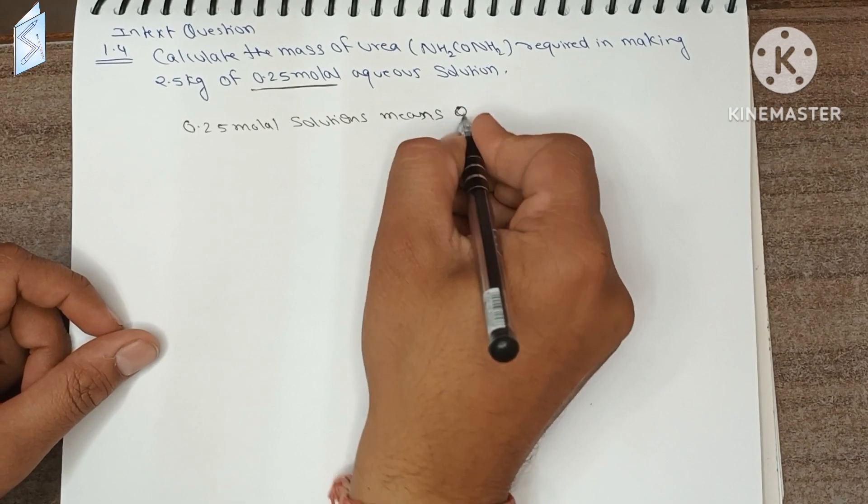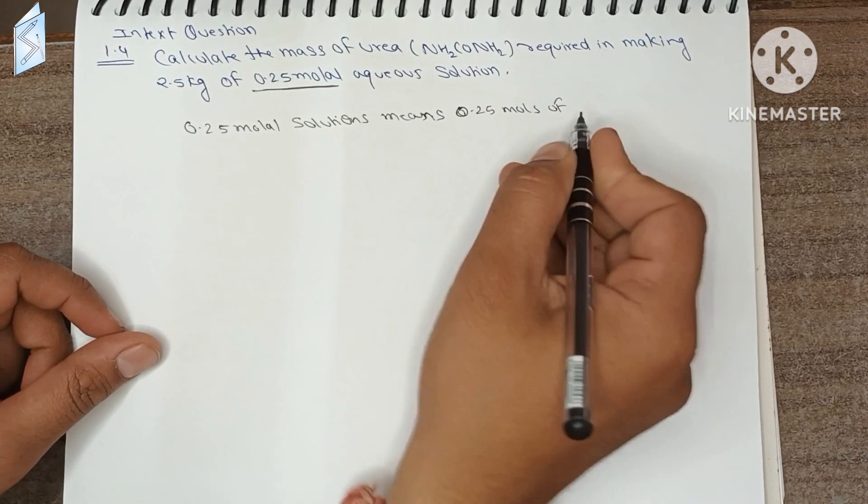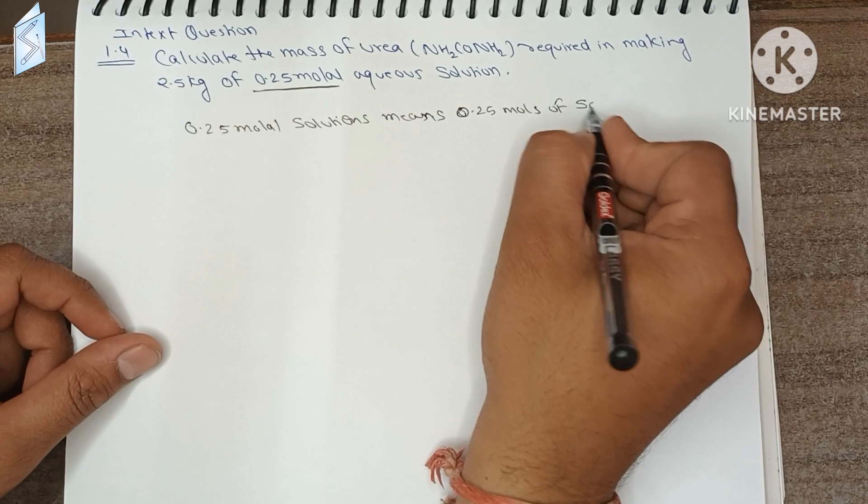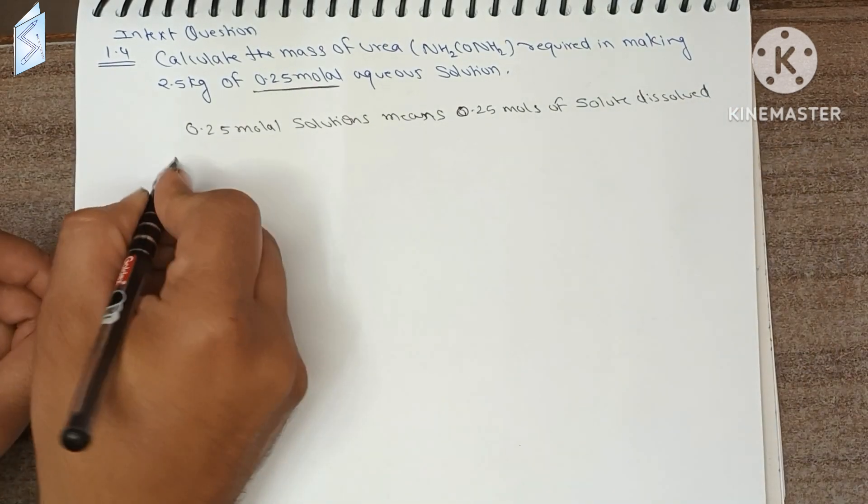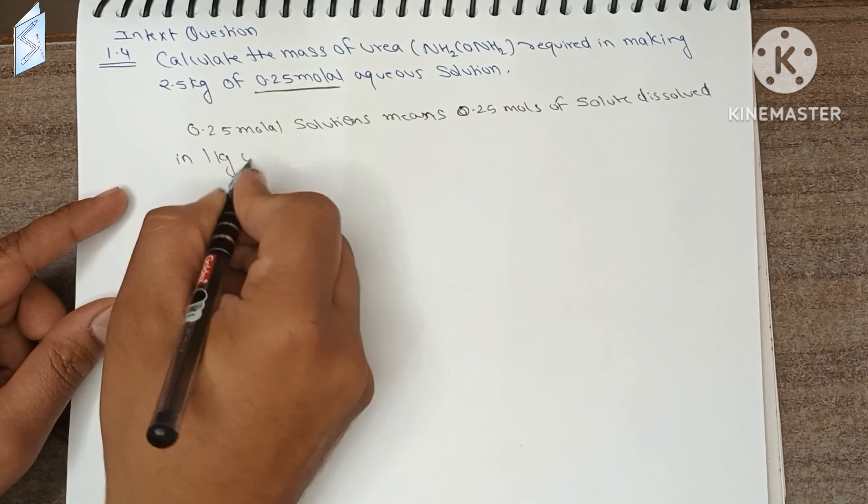0.25 molal solution means 0.25 mols of solute dissolved in 1 kg of solvent.